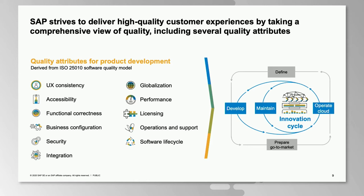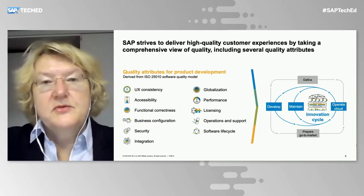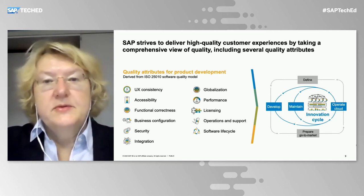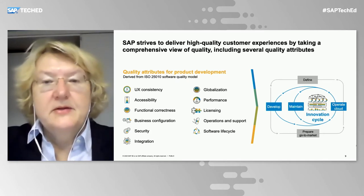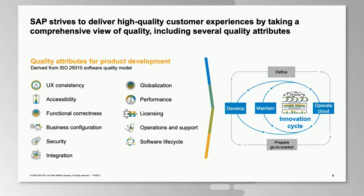This also includes performance for scaling, licensing, operations, and support in the software life cycle. Along this whole stack — from user experience down to integration and security, expanding towards operations, support, and software life cycle — these are important product standards at SAP. They are considered along the innovation life cycle: development, maintenance, cloud operations, and the definition of a product in preparation for go-to-market. We strive to ensure quality technology along the full development life cycle.